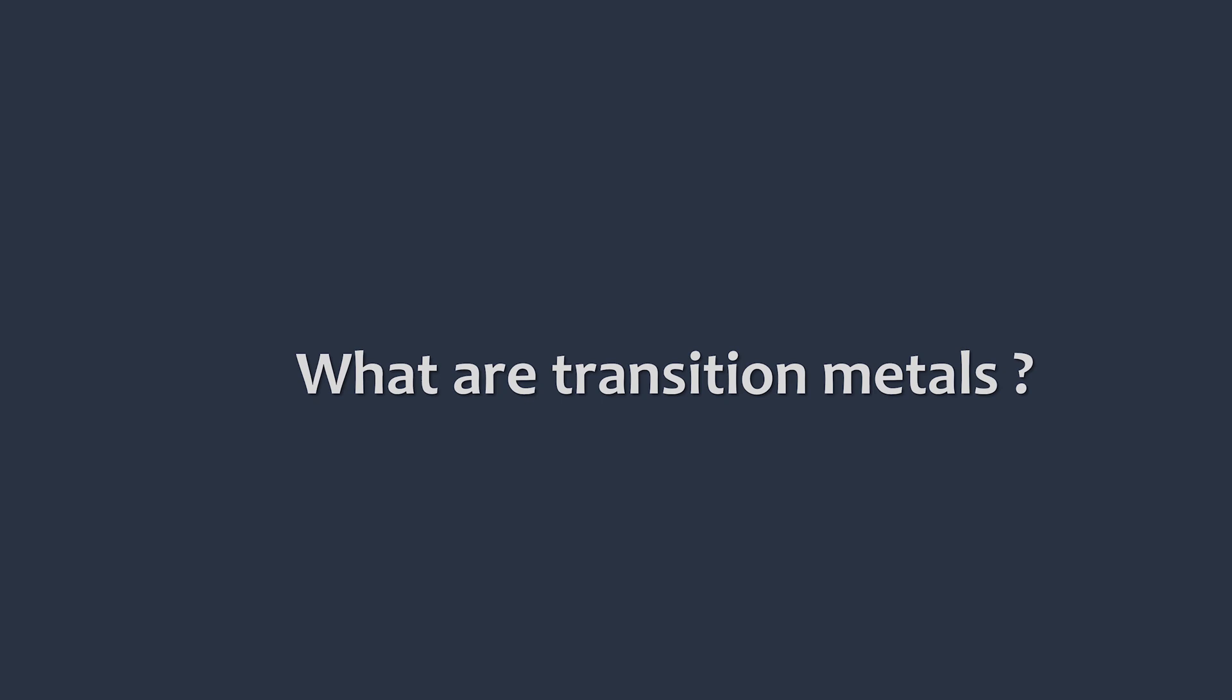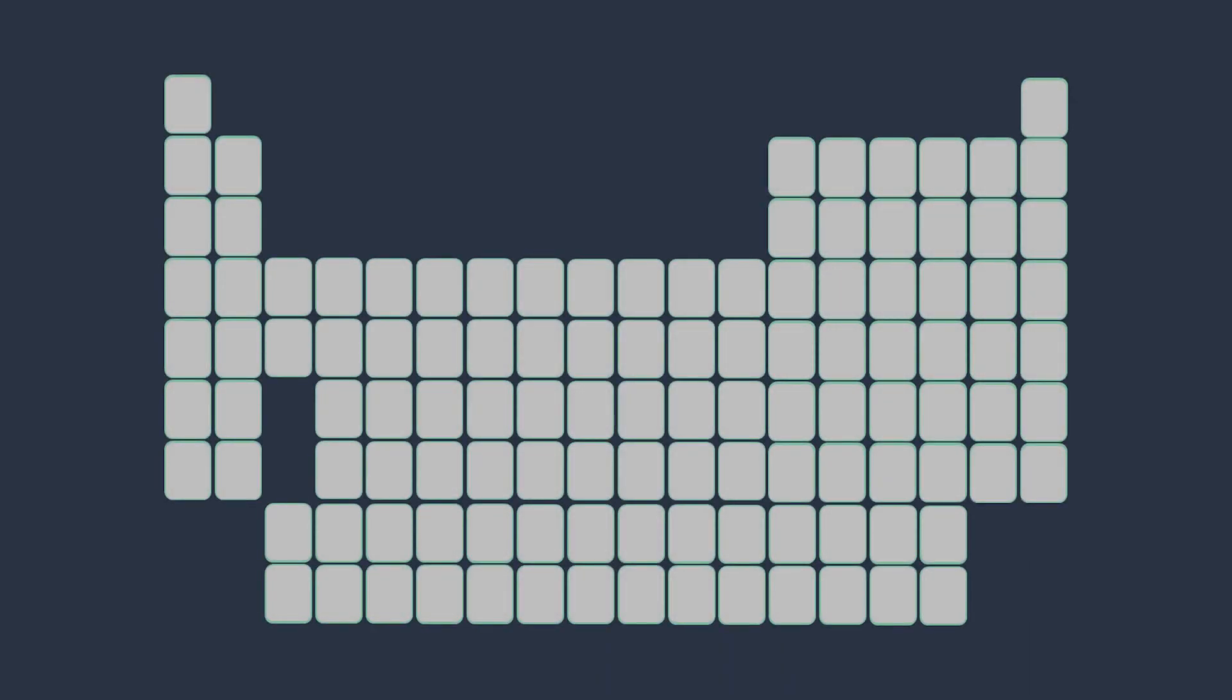What are transition metals? Transition metals are elements in this block of the periodic table. They include some familiar metals in daily life such as iron, copper, silver, or tungsten. These elements have one thing in common, that is a partially filled or incomplete D-subshell.